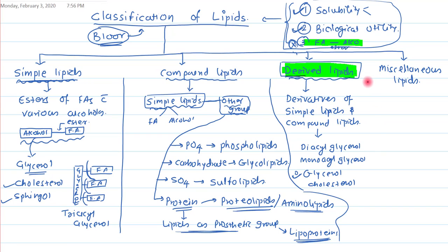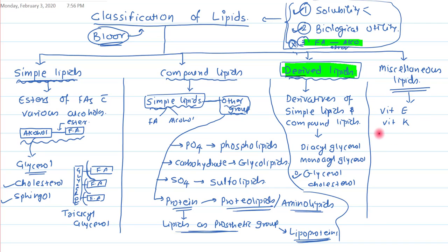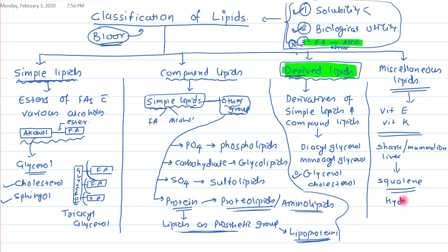Miscellaneous lipids are lipids that cannot be placed under simple, compound, or derived lipid categories. For human biochemistry, the two important compounds are vitamins E and K. In non-human biochemistry, such as in shark or mammalian liver, there is a compound known as squalene — a hydrocarbon — which is also placed under miscellaneous lipids.